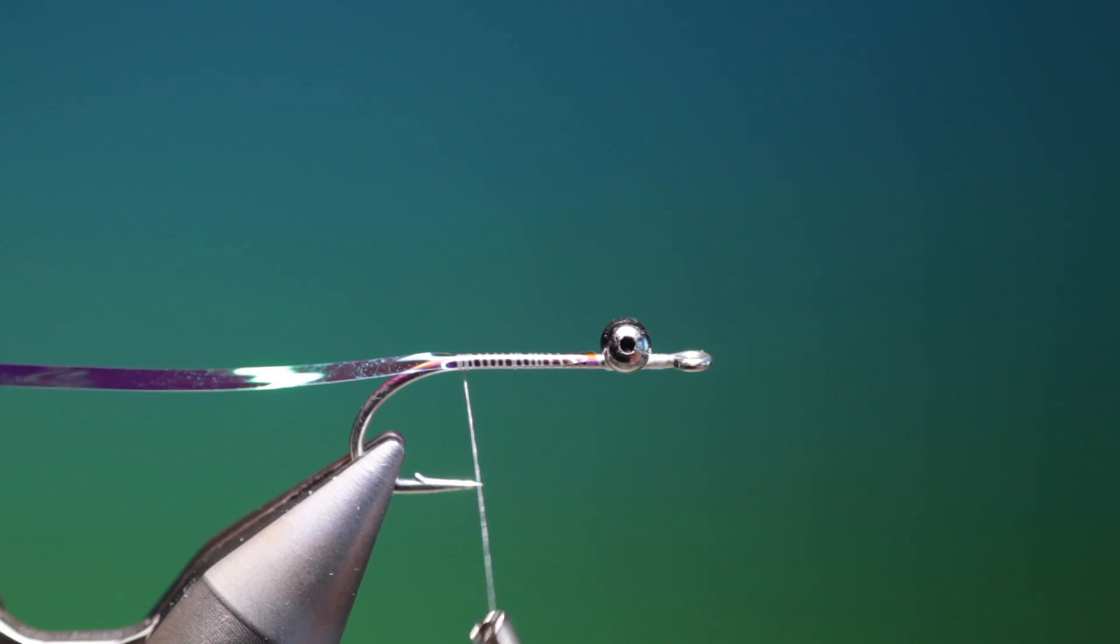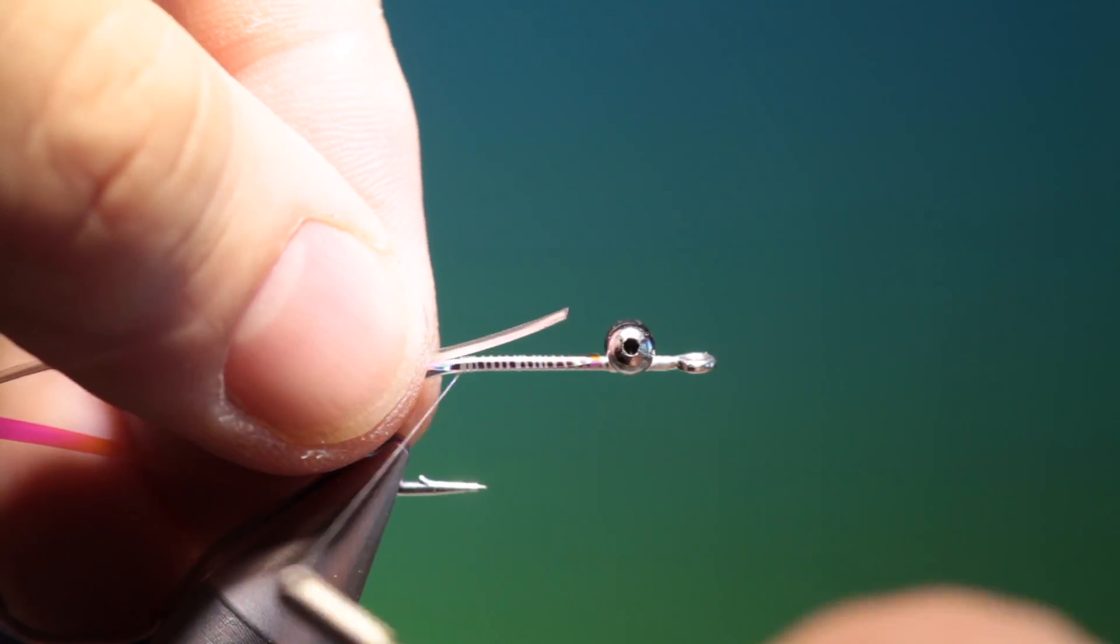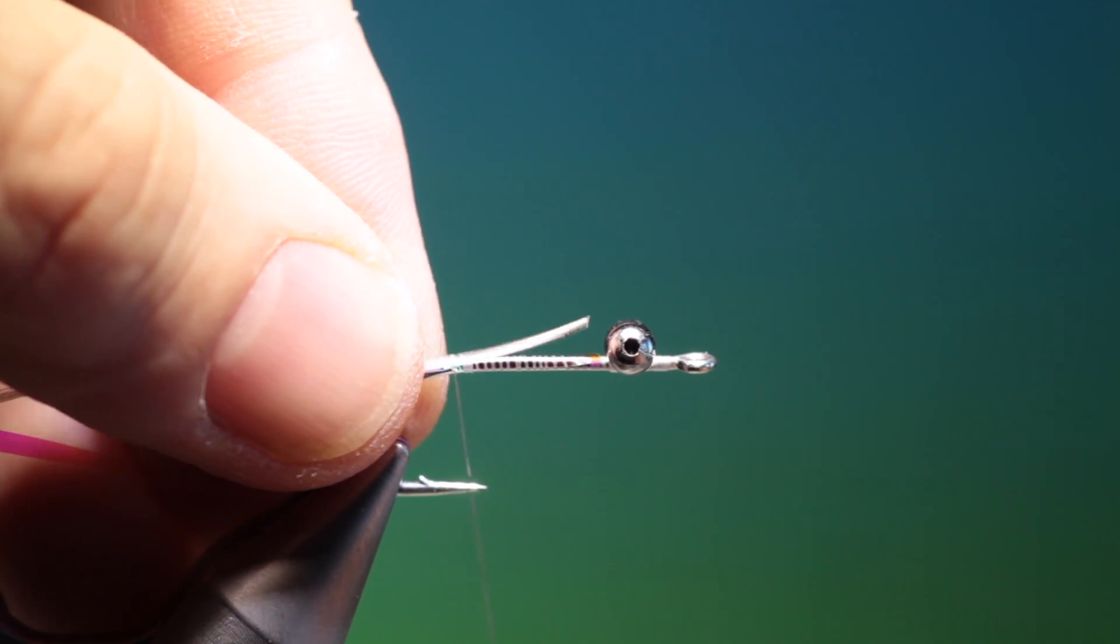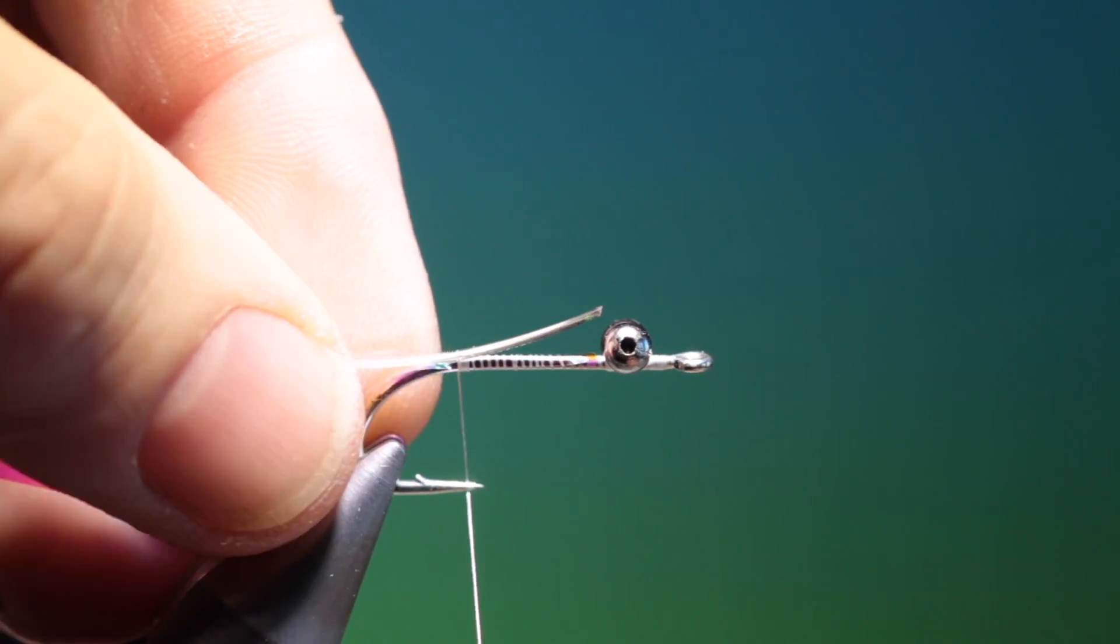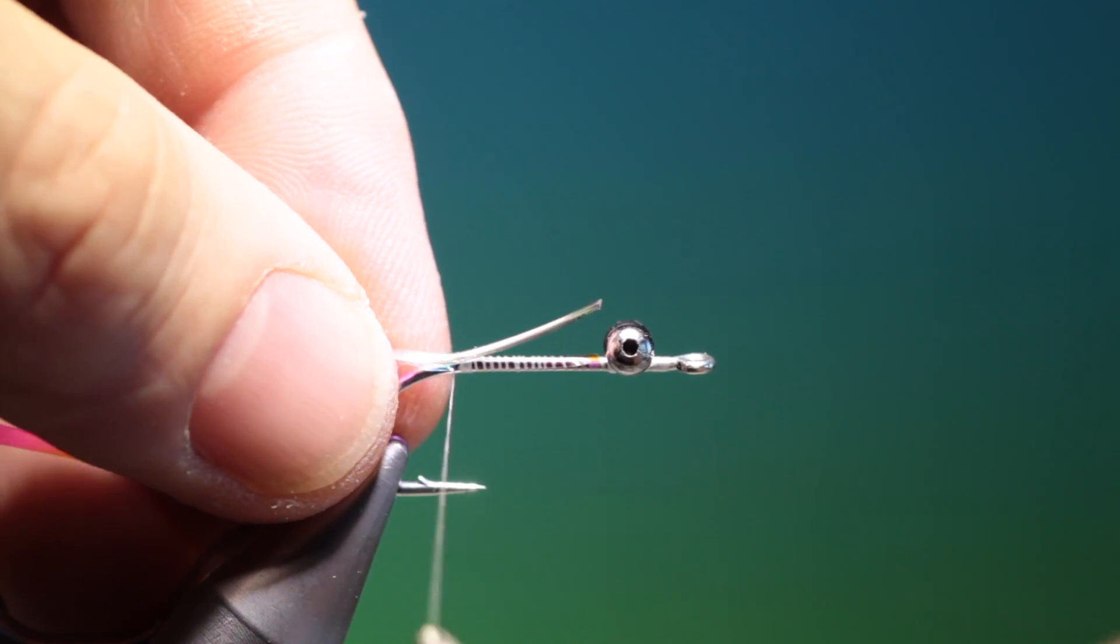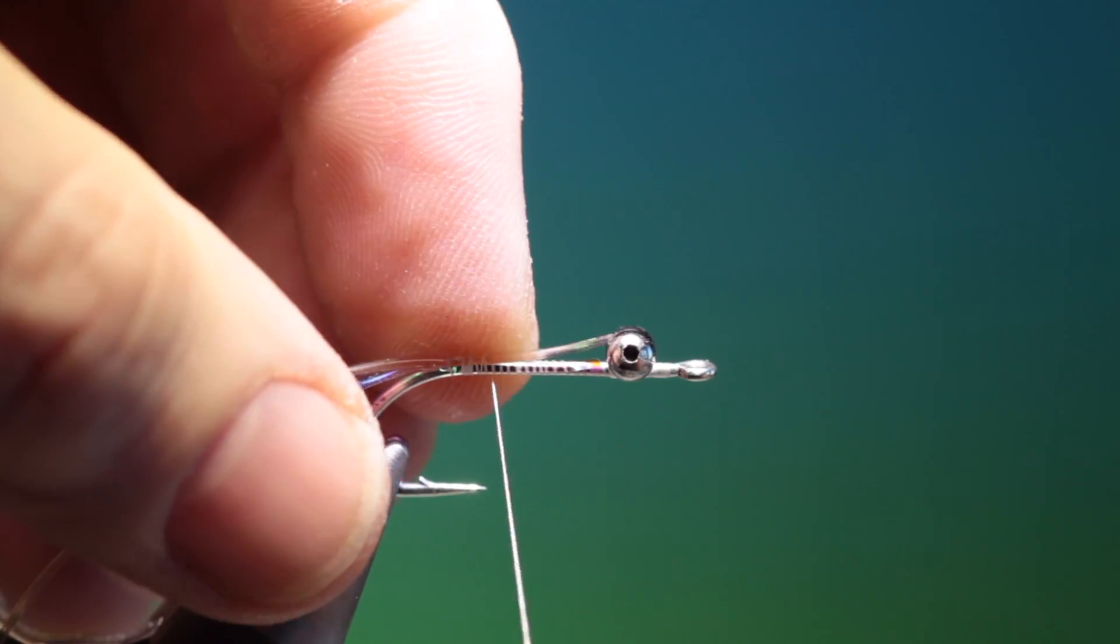And then we need some magic glass v-rib. You can use any color you like. We want the end of the rib just to go in between the eyes so you get an even body when you wrap it afterwards. Just attach that and keep it on top of the hook shank.